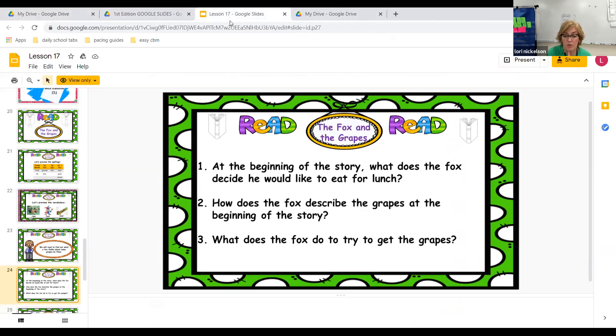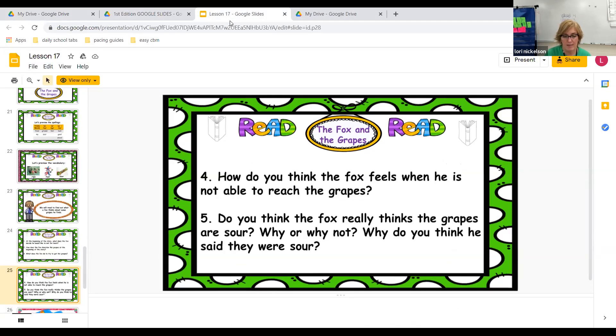What does the fox do to try to get the grapes? Doesn't he jump? Then he runs and jumps and he tries to stand on his back legs, right? But does he ever get the grapes? No, he does not. How do you think the fox feels when he's not able to reach the grapes? He looks exhausted, doesn't he? Thinking, well, this isn't worth it, is it?